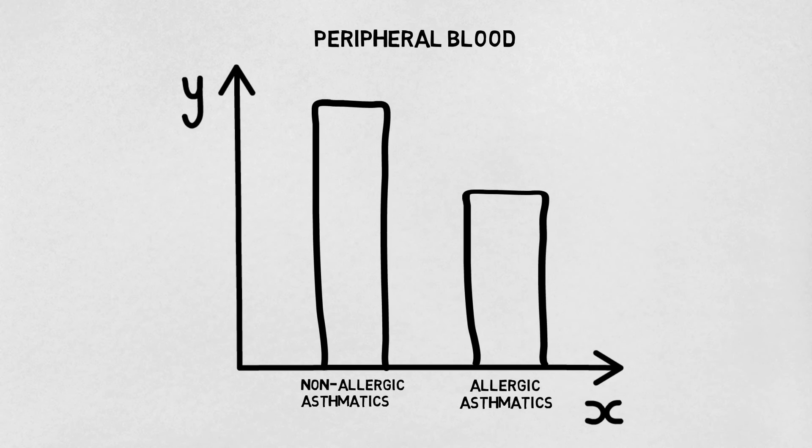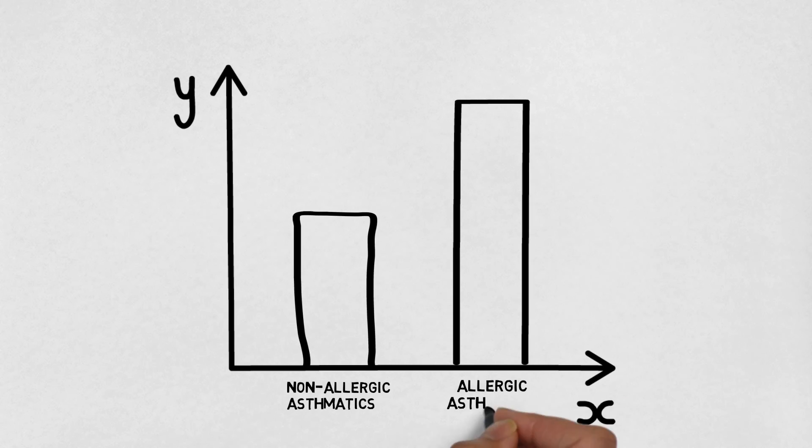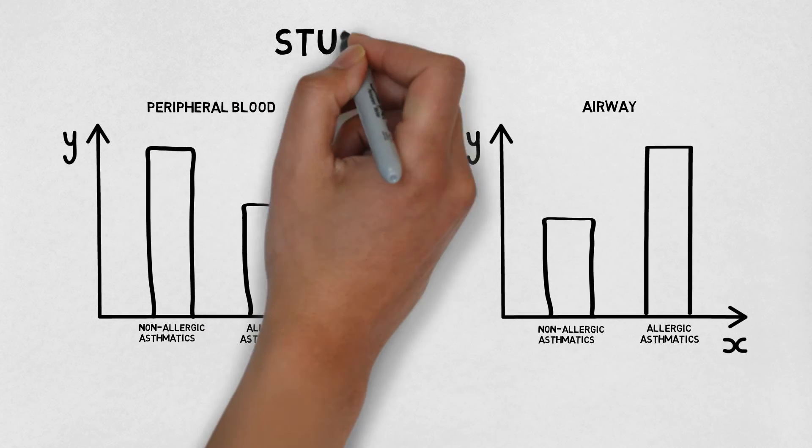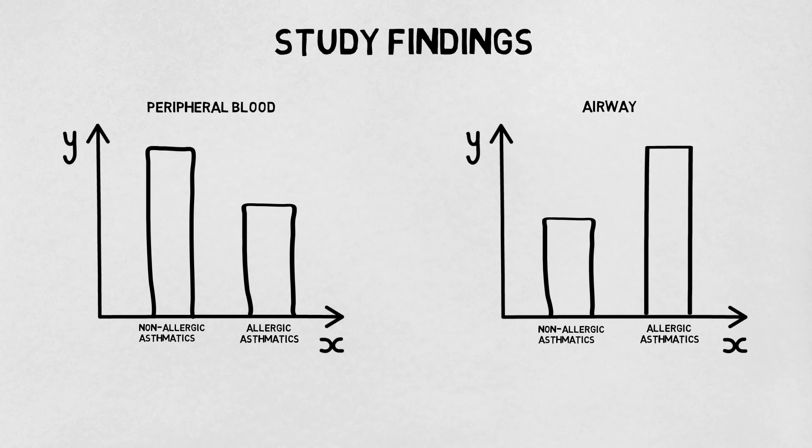At the cardiorespiratory lab, one of our studies found that asthmatics have lower levels of Bregs in their blood in comparison to healthy people. However, if you look at asthmatic airways, they have higher levels of Bregs in comparison to healthy people. This suggests that Bregs migrate in asthmatics from the blood to the airways to try to decrease this harmful inflammation.